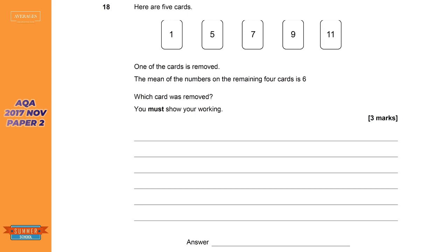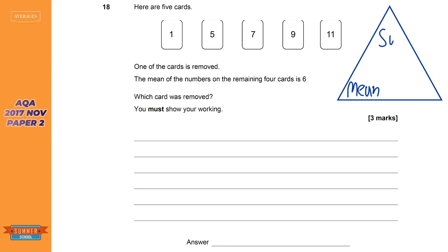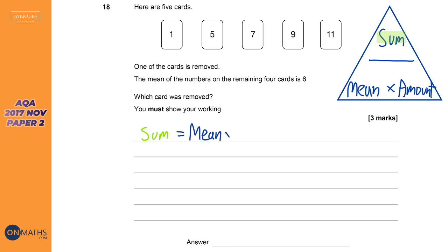I'm going to show you a kind of triangle — like the ones used in speed, distance and time, or SOH-CAH-TOA in trigonometry. Not many people know it works with the mean as well. We know mean equals the sum of the numbers over the amount, and that creates a triangle. So if we have the mean and the amount and we're looking for the sum, we just times the mean by the amount.